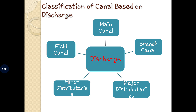Next is minor distributaries. They get the water supply either from the major distributaries or from the branch canals. These canals have a discharge-carrying capacity of less than 0.25 cubic meters per second. They supply water to the agriculture fields directly. Field canals — also called water courses — collect the water from the outlet of the major or minor distributaries and carry water directly to the agriculture field. These field canals are constructed, controlled, and maintained by the actual users of the water, that is, the farmers or the owners of the field.